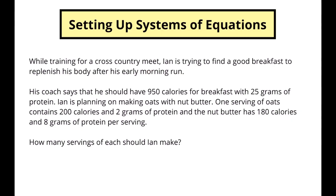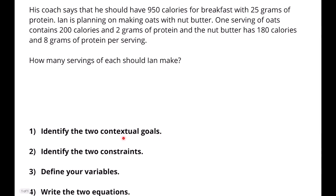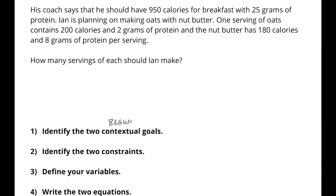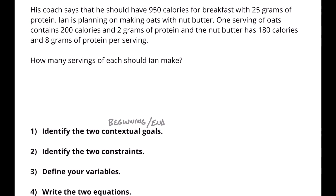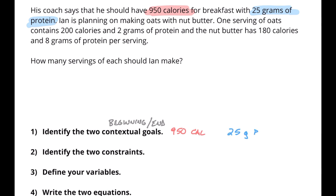This first part is just background information setting up the problem — we don't actually need this, so I'm going to get that off the screen so we've got more space to work with. Contextual goals are often at the beginning or end of the problem, so generally look for the first or last sentence. I see two things here: his coach says he has to have 950 calories for breakfast, and he has to have 25 grams of protein. Those are the end goals — the totals. That's what we're shooting for.